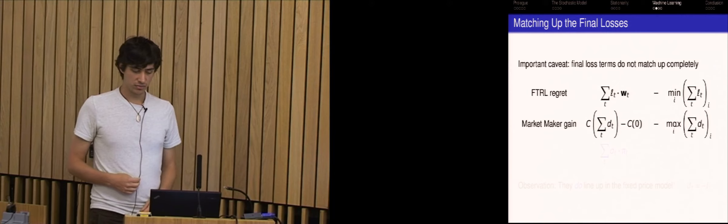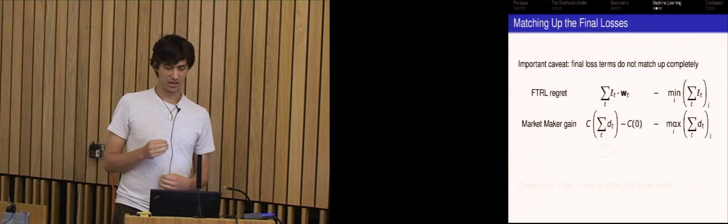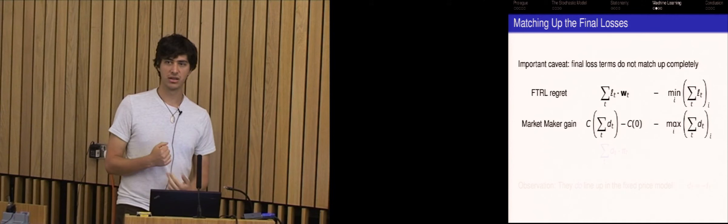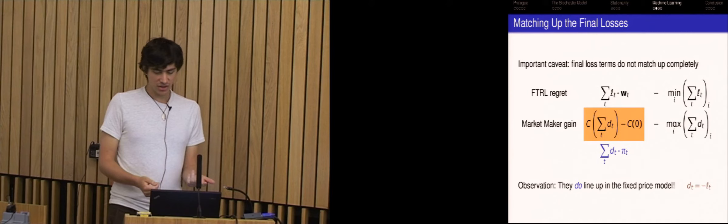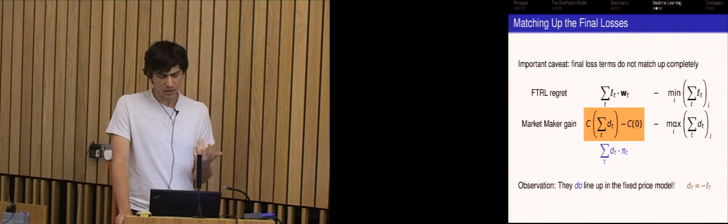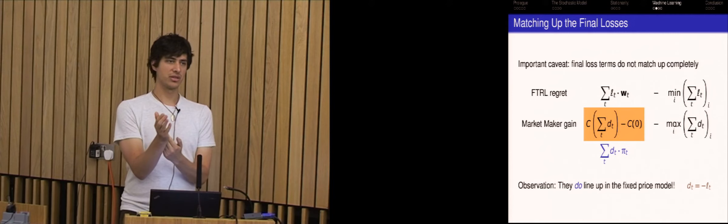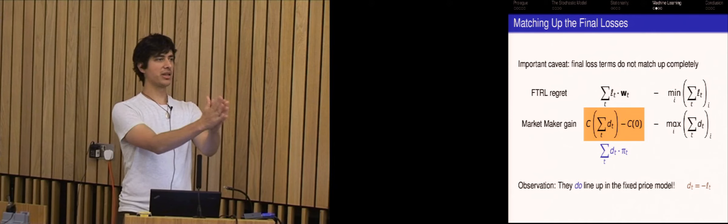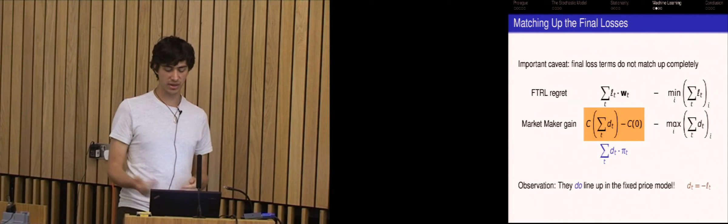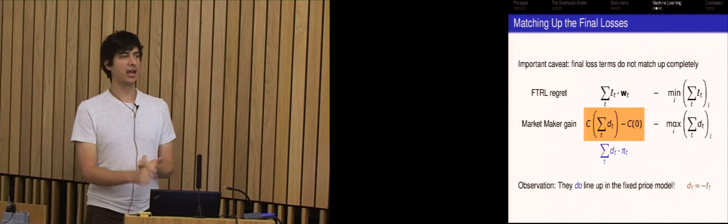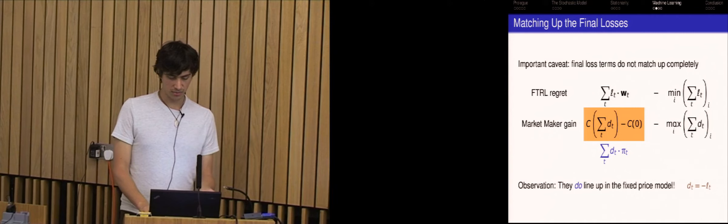So at each trade, a trader gives you the difference in the potential between the next quantity vector and the previous one. And you can see that at the end, therefore all these things telescope. And the amount of money that the market maker has gained in the process is just the difference between the C evaluated at the final quantity and C at the beginning. So that's how much the market maker gains. And then the second term is how much the market maker has to pay out in the worst case.